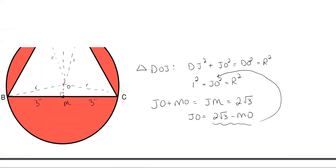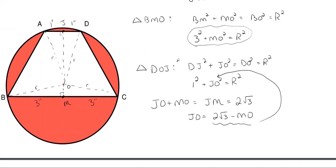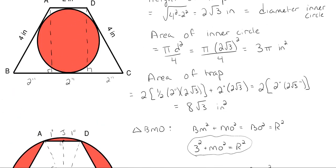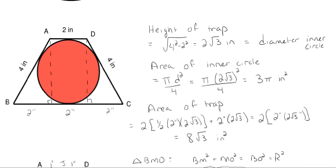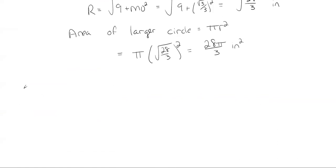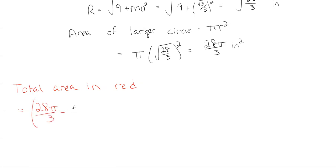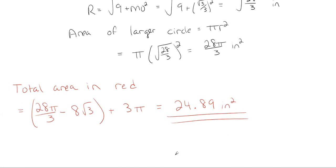Now that we have the total area of the entire larger circle, we subtract the area of the white trapezoid and add back the area of the internal circle to get everything in red. Total area in red = 28π/3 − 8√3 + 3π, which works out to approximately 24.89 inches squared. That is our final area in red for this problem.